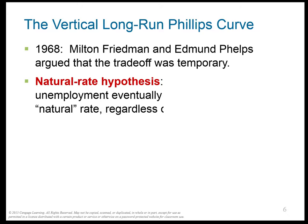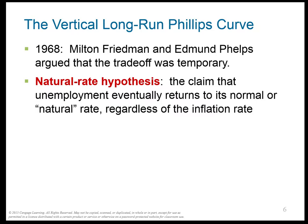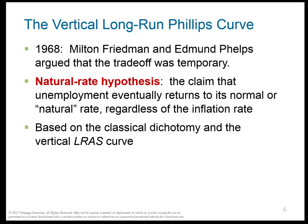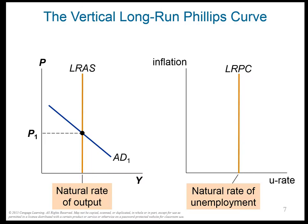Milton Friedman and Edmund Phelps in 1968 said this can't happen forever. They came up with the natural rate hypothesis: unemployment and GDP return to their normal or natural rate regardless of the inflation rate. This is based on the classical dichotomy and the vertical long-run aggregate supply curve.